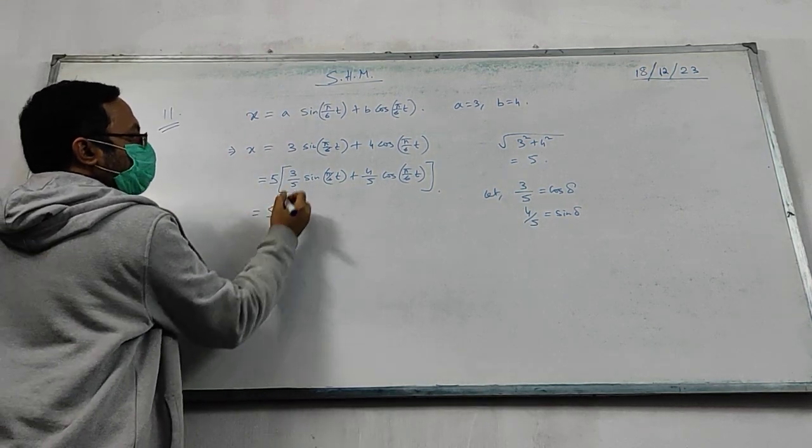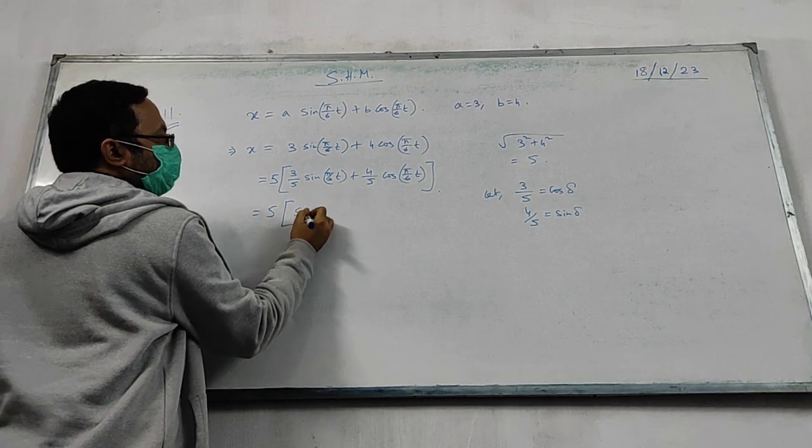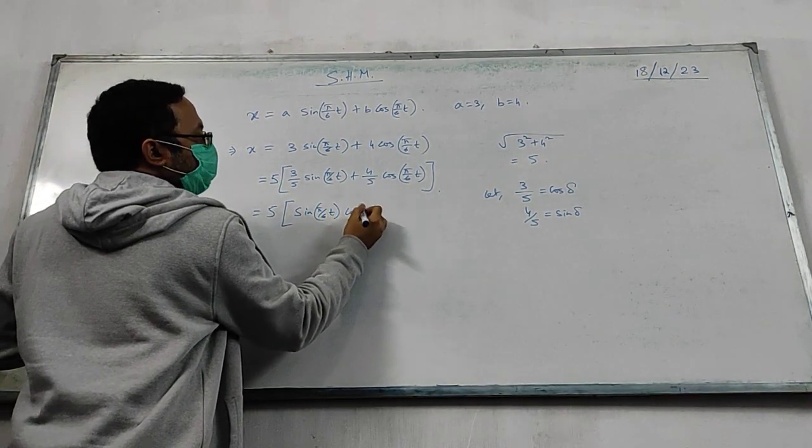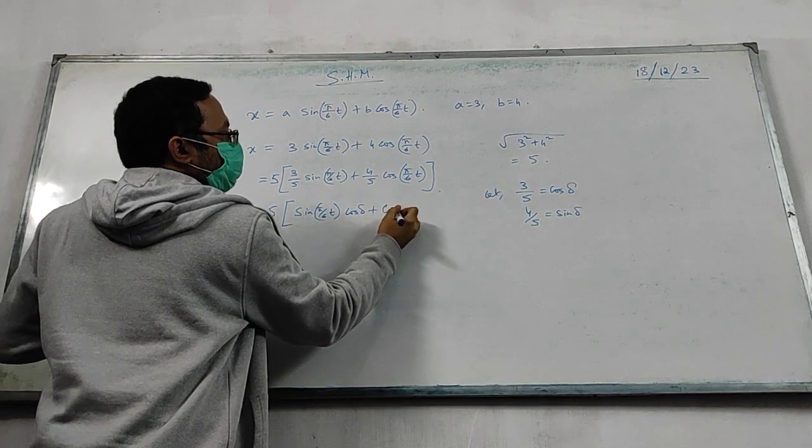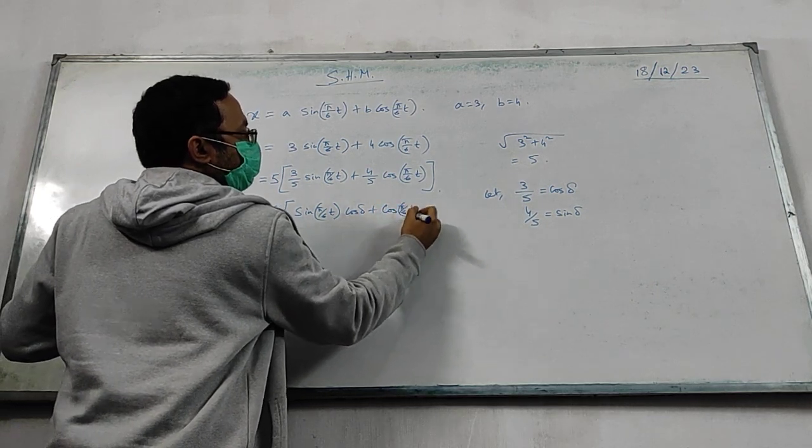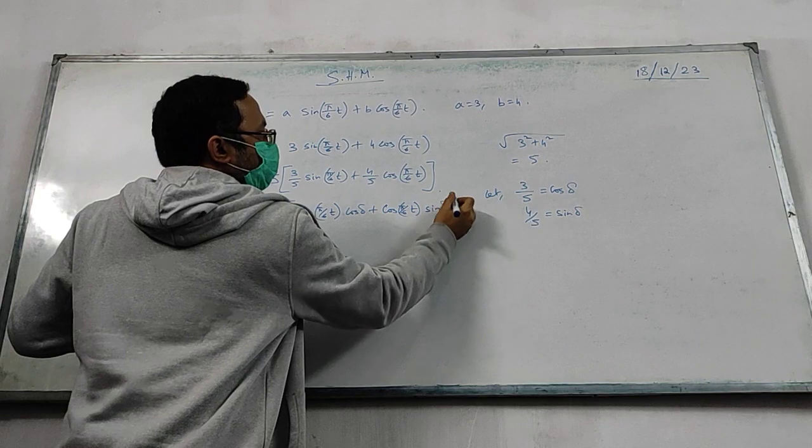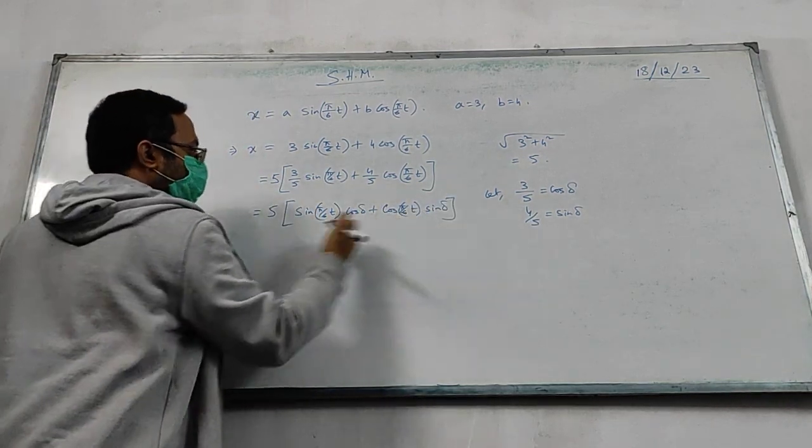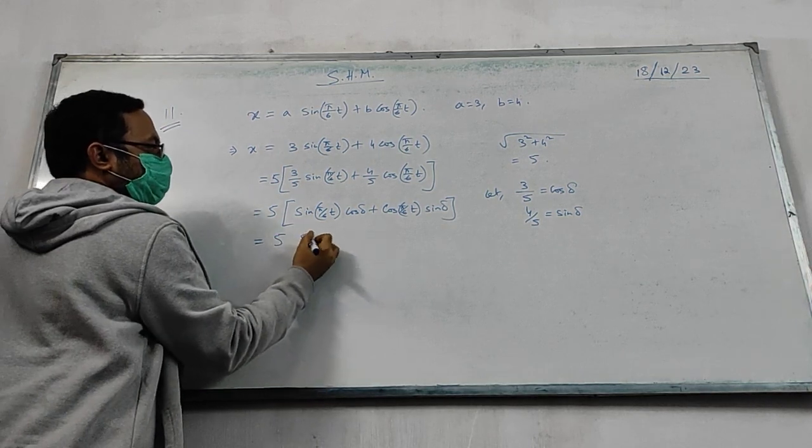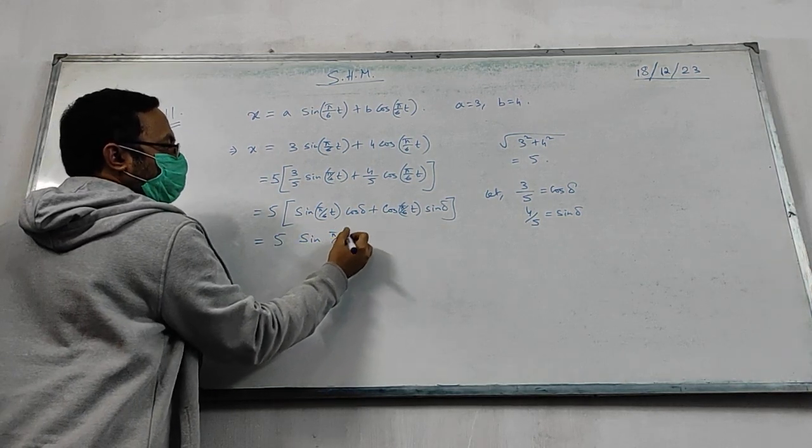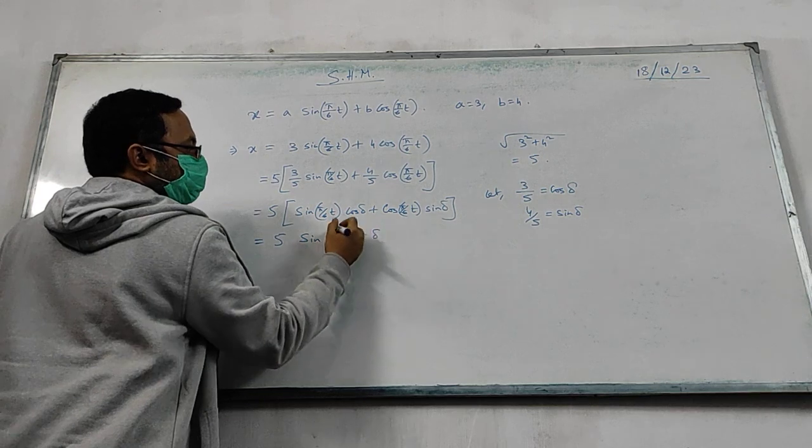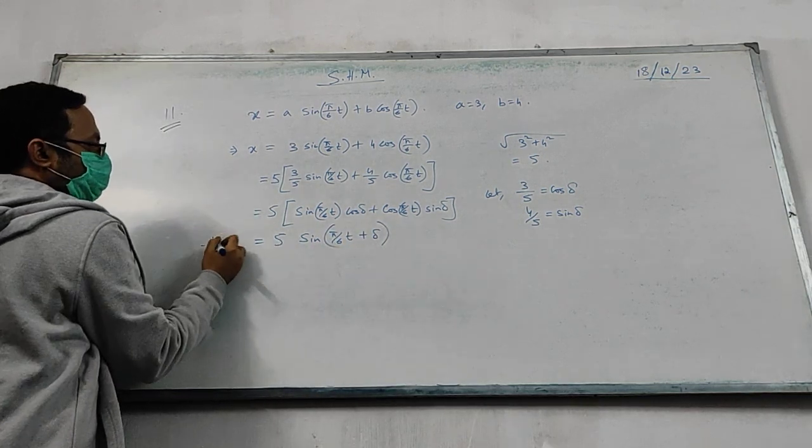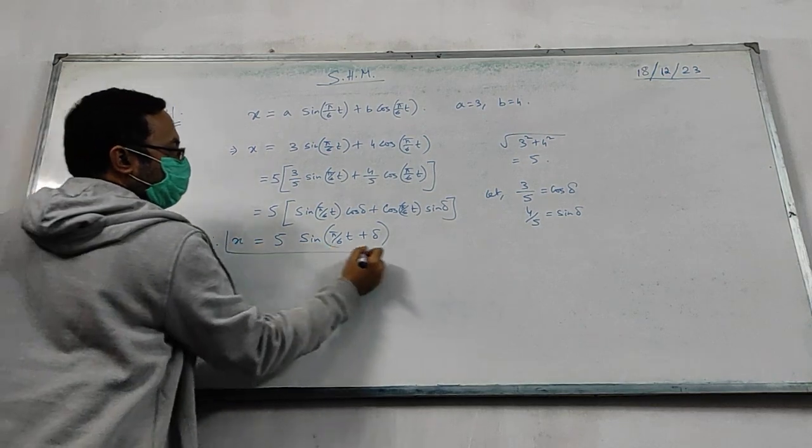Now this becomes sin pi by 6t cos delta plus cos pi by 6t sin delta. Right? And what is this? Sine of a plus b, right? Pi by 6t plus delta.